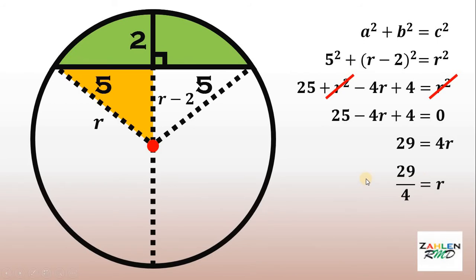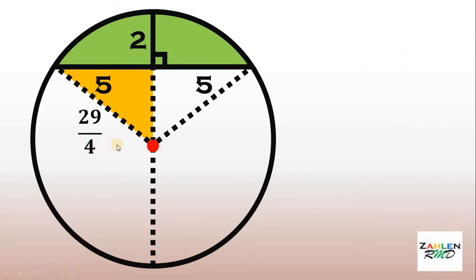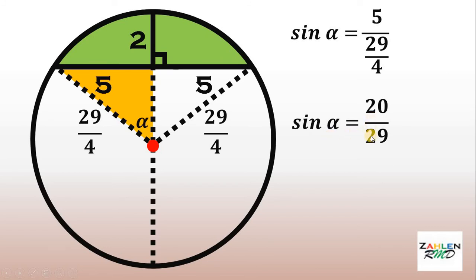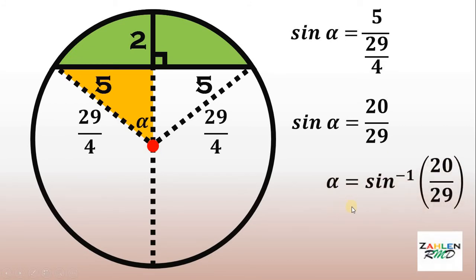Now we know the length of the radius of this circle — it is 29 over 4. Next, let this angle be equal to alpha. Using this right triangle, we can say that sin of alpha is equal to 5 over (29 over 4), which is the opposite side of angle alpha over the hypotenuse. Simplifying, sin alpha equals 20 over 29, so alpha equals arcsin(20/29).